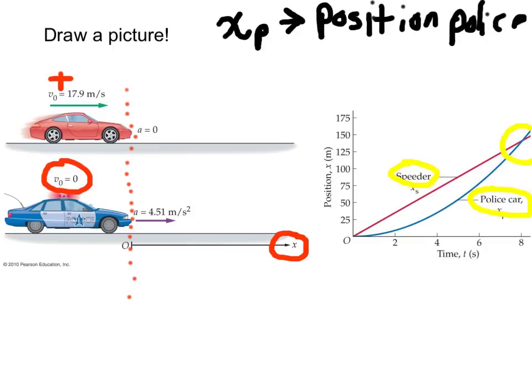And then we're going to write a separate equation for the speeder. And we'll call the speeder's equation x sub s. And so, from now on, that will mean position of the speeder.